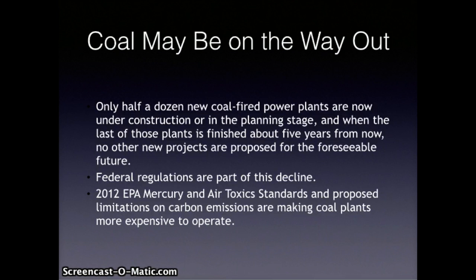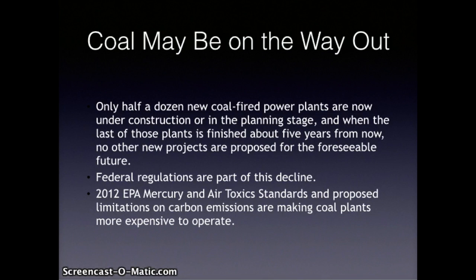Federal regulations are part of this decline. The Mercury and Air Toxic Standards, announced by the EPA in 2012, will slash allowable mercury emissions from coal-fired power plants. This was required by the 1970 Clean Air Act, but was delayed for decades by owners of old power plants who argued their facilities were about to close anyway. Forty years later, many of those plants were still operating and emitting dangerous pollutants. The EPA estimates the new rules will cost utilities about $9 billion but will save $90 billion in health care costs by 2016, by reducing exposure to mercury, arsenic, chromium, and fine particulates that cause mental retardation, cardiovascular diseases, asthma, and other disorders.